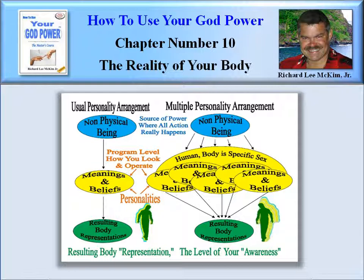That would be the meanings and beliefs for the first one. Then the second one, even though they might be in a male body, that second personality might believe it's female. So even though it's in a male body, it's expressing female type thinking, female type personality traits. And that personality might have great eyesight, might not be allergic to anything, might be really good at this or that. Then as you see, each of these personalities — some have diseases, some don't; some have good eyesight, some don't; some have scars and some don't. That's the meanings and beliefs level. So whichever personality is resident, that is in force, that is being elicited at that moment — that meaning and belief set — will automatically represent a body. You'll have a resulting body representation.